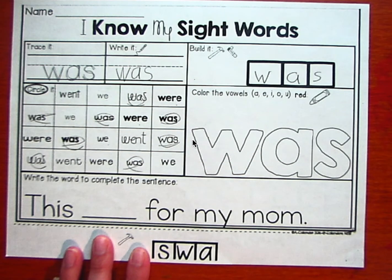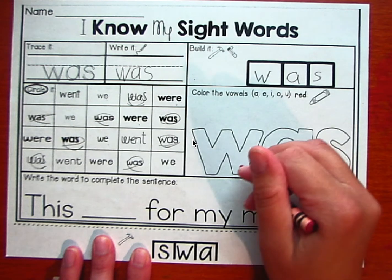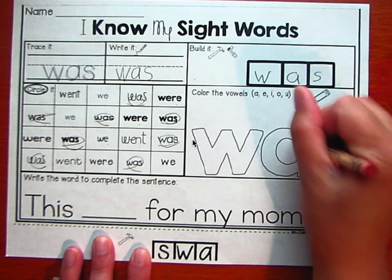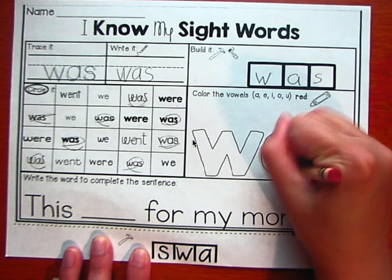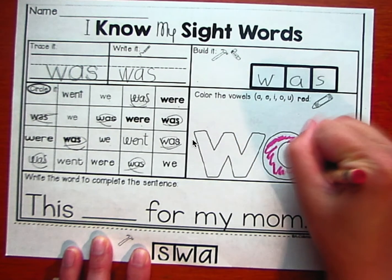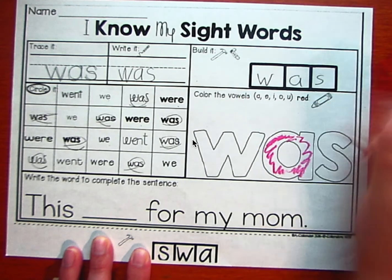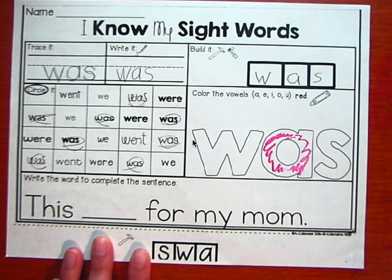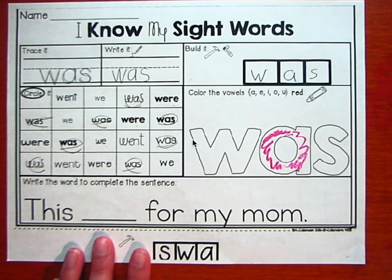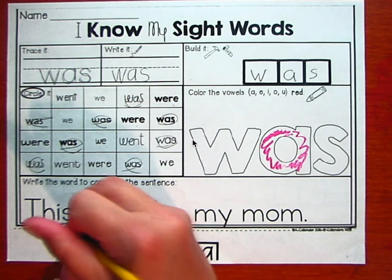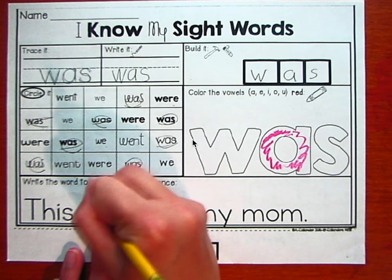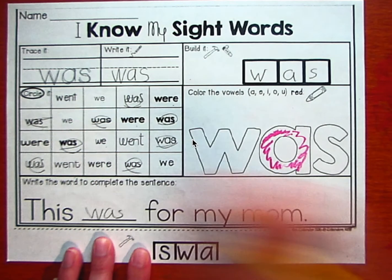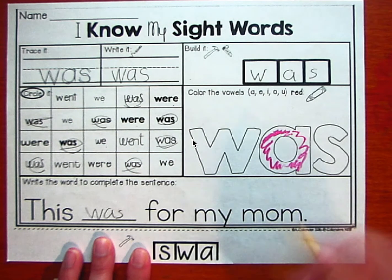Let's fill in the vowels. W is a consonant, A-S is a consonant. All right. This was for my mom. Wonderful.